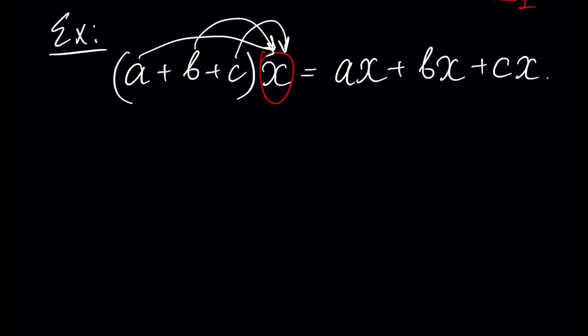This can also be written as x times (a plus b plus c). Let's repeat our main rule: the product of two or more polynomials is equal to the sum of products of each term of the polynomial. Each term is a monomial.